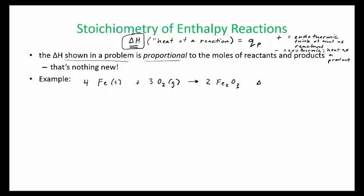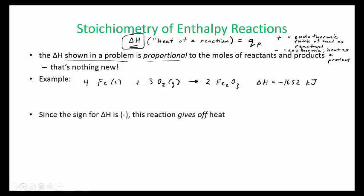And you'll see this number after it. Delta H equals negative 1652 kilojoules. So this is actually the, yeah, so let's go over what this means.